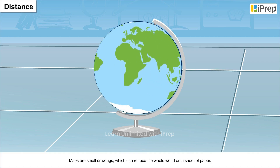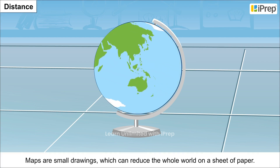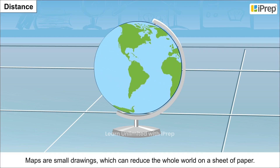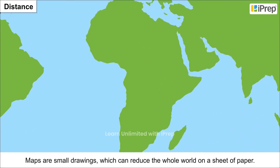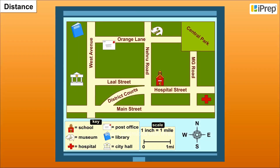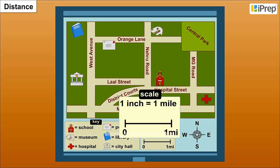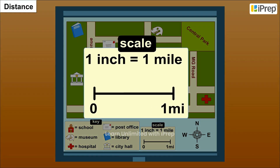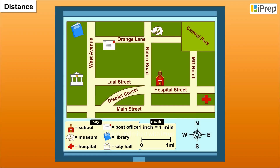Distance. Maps are small drawings which can reduce the whole world on a sheet of paper. Scale plays a significant role in a map. It is the ratio between the actual distance on the ground and the distance shown on the map. On the basis of scale, maps are categorized into two types.